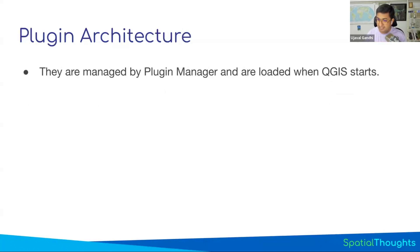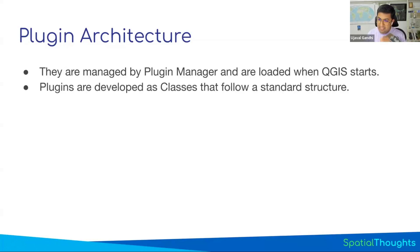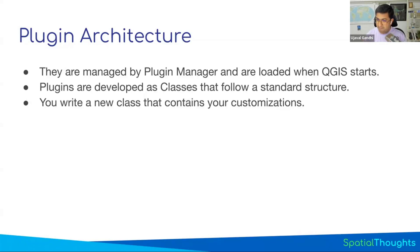Plugins are managed by the Plugin Manager in QGIS. When QGIS starts, it calls the Plugin Manager, which looks at a special folder in your QGIS profile and goes through each plugin you have installed, running the initialization and loading code. Each plugin folder needs to have certain special files that the Plugin Manager looks for. When it finds those files, it runs the code to initialize the plugin and add buttons, menu items, and anything else you've added.